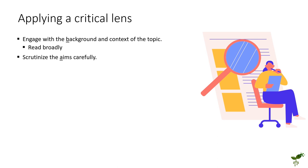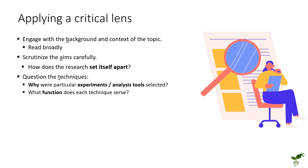Then scrutinize the aims very carefully. In particular, how well does the research set itself apart? What is it doing that's different, and how is it justifying this difference? Then look at the techniques and question them. In particular, why were particular experiments and analysis tools conducted? Why were they selected? What was their function or purpose? As time goes on, you'll learn more about these techniques themselves and be able to identify whether they are useful for their purpose or not. But in the first stage, at the very least identify what their purpose is in the particular source you're reading.